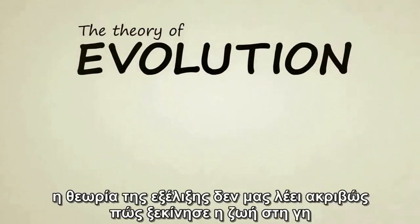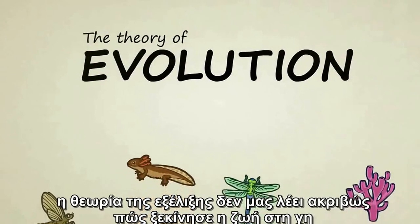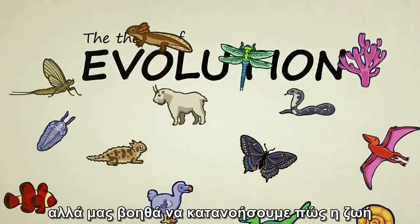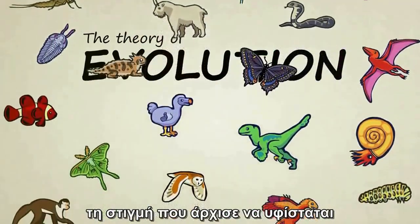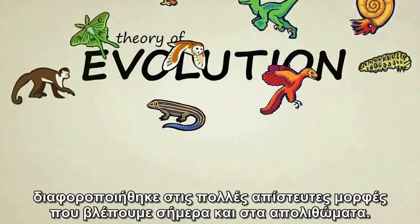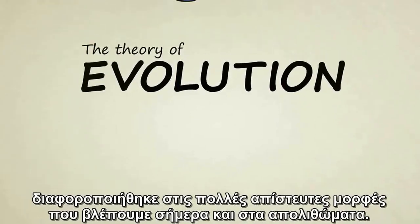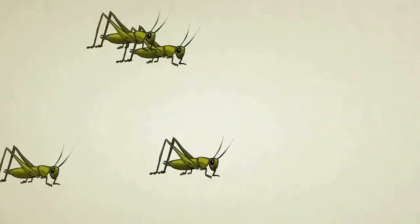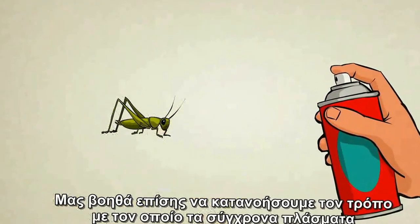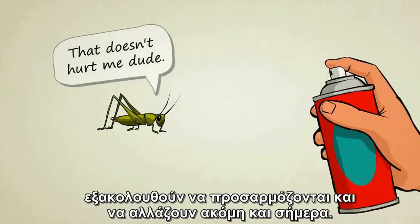In biology, the theory of evolution doesn't tell us exactly how life began on Earth, but it helps us understand how life, once it came into existence, diversified into the many incredible forms we see now and in the fossil record. It also helps us make sense of the way in which modern creatures continue to adapt and change today.